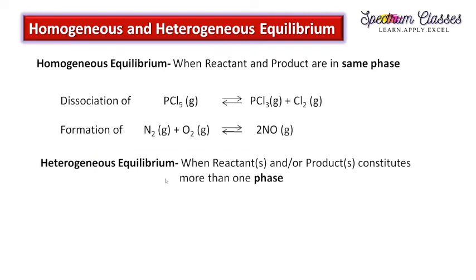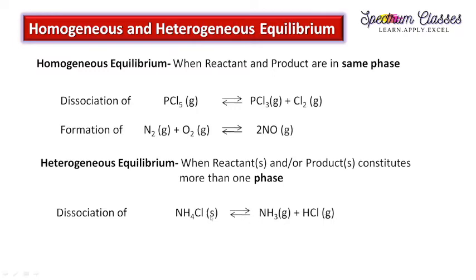Now coming to heterogeneous equilibrium. The dissociation of ammonium chloride (solid) gives NH3 (gas) plus HCl (gas). Here, NH4Cl is in solid state whereas ammonia and HCl are in gaseous form. The reactants and products are in different physical states — solid state versus gaseous state — so reactants and products constitute more than one phase.